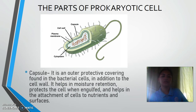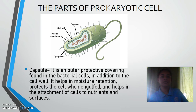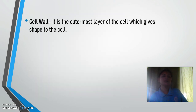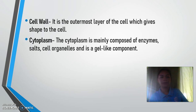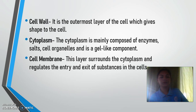The parts of the prokaryotic cell: the first part is the capsule, a protective covering found in the bacterial cell. In addition to the cell wall, it helps in moisture retention, protects the cell when engulfed, and helps in attachment of cells to nutrients and surfaces. The cell wall is the outermost layer of the cell, which gives shape to the cell. The cytoplasm is mainly composed of enzymes and cell organelles, and is a gel-like component. The cell membrane surrounds the cytoplasm and regulates the entry and exit of substances in the cell.